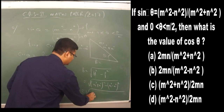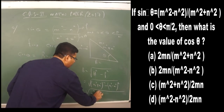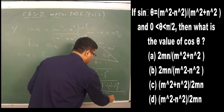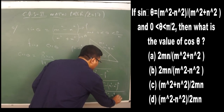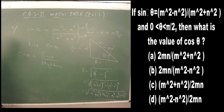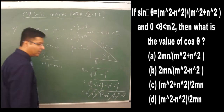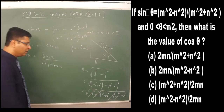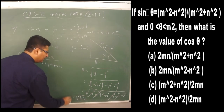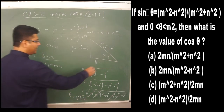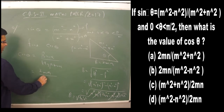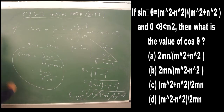Expanding: (m² + n²)² = m⁴ + n⁴ + 2m²n², and (m² - n²)² = m⁴ + n⁴ - 2m²n². Subtracting, m⁴ and n⁴ cancel, leaving 4m²n². Taking the square root, base = 2mn. Therefore cos θ = 2mn/(m² + n²).